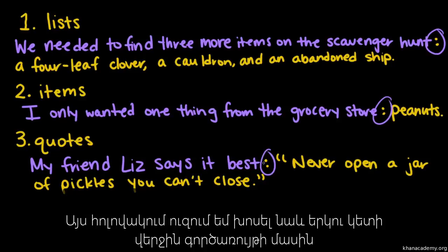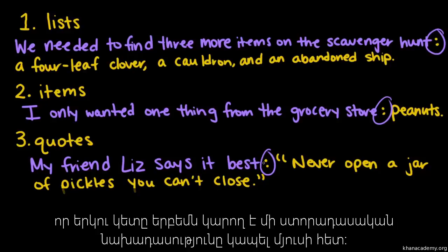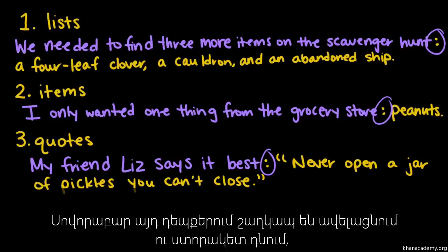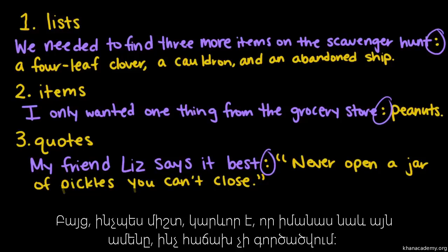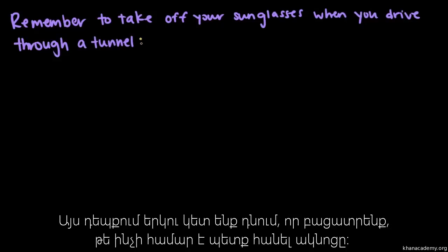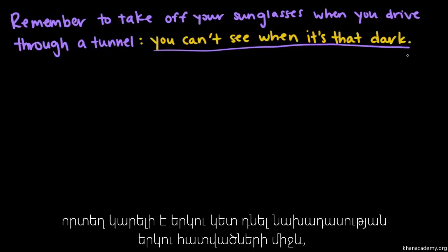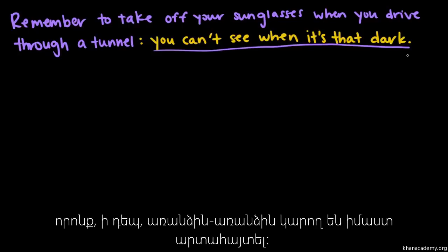There's one final case of the colon's linking function: colons can introduce an independent clause to another independent clause. That's pretty rare — usually that's the job of a comma and a conjunction, or maybe a semicolon. But it's still important to know. For example: 'Remember to take off your sunglasses when you drive through a tunnel: you can't see when it's that dark.' The colon shows that the second part is an explanation of why you need to take off your sunglasses.